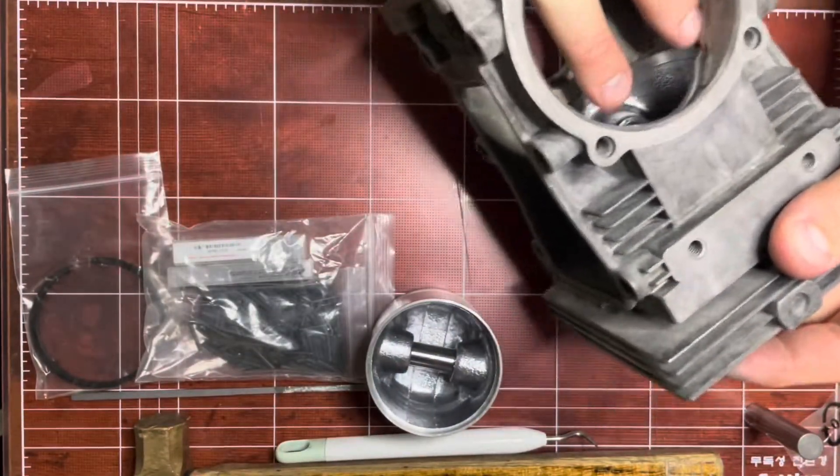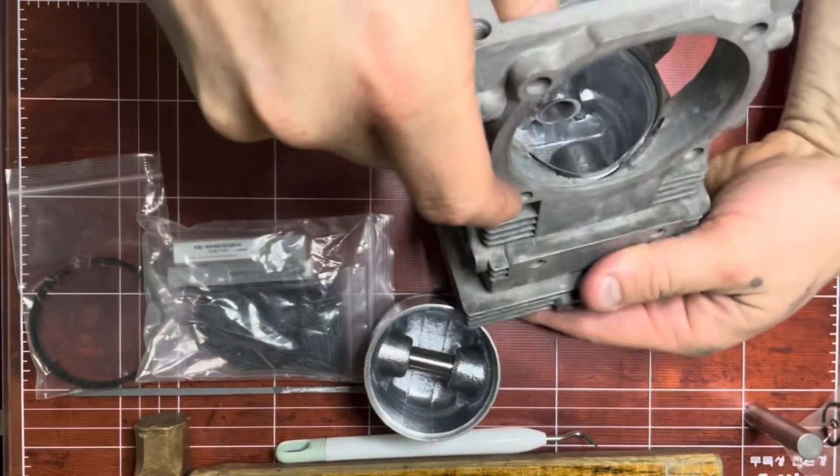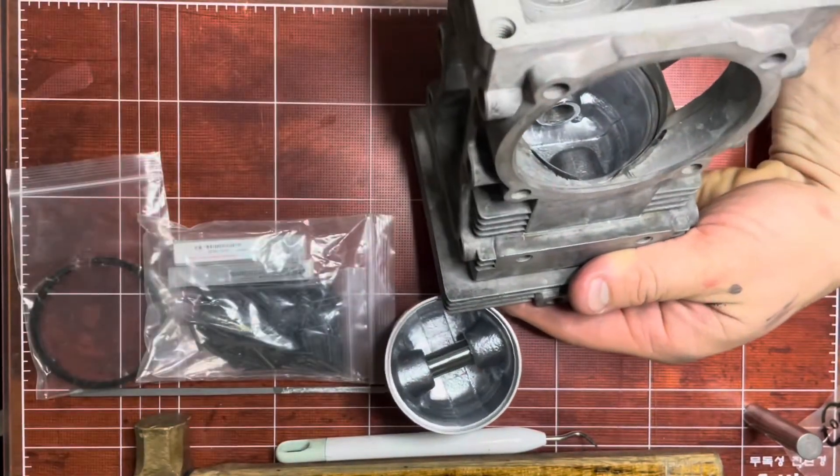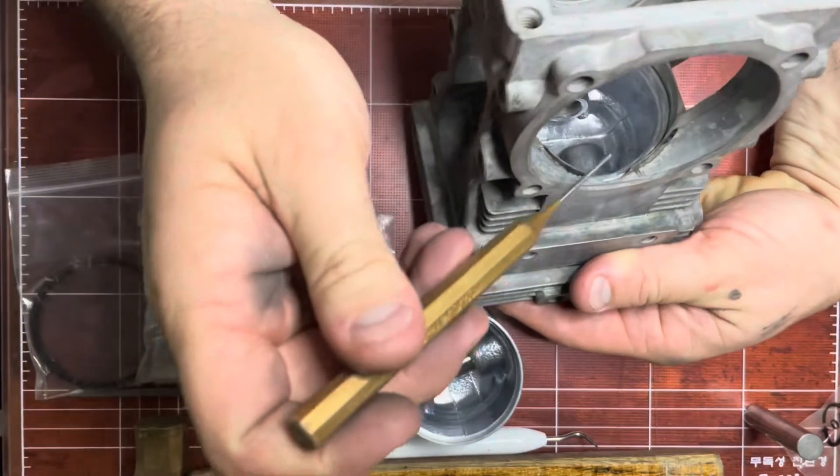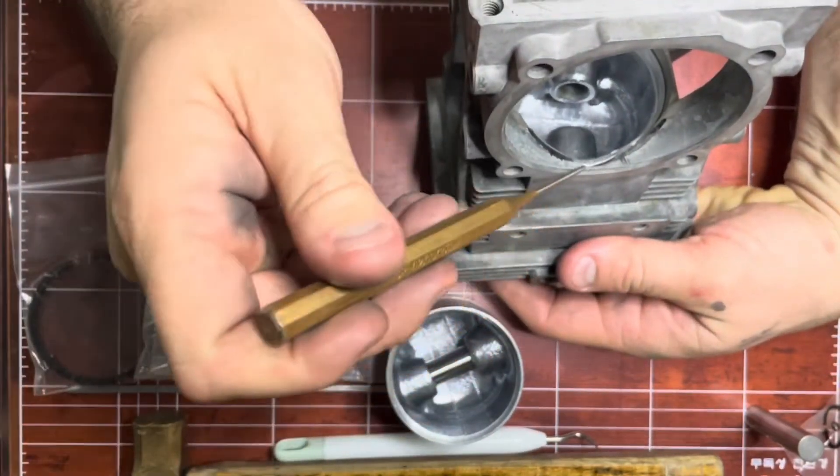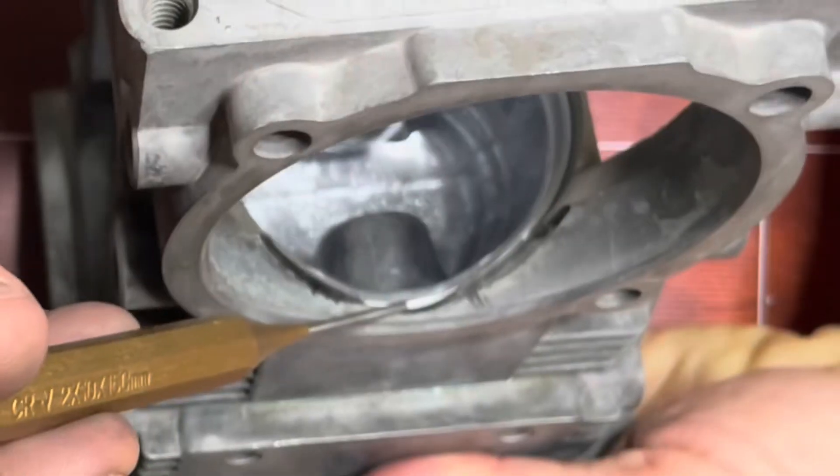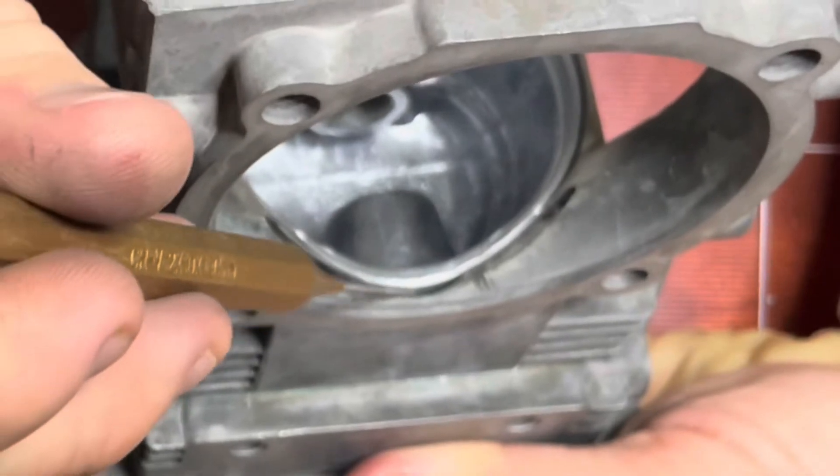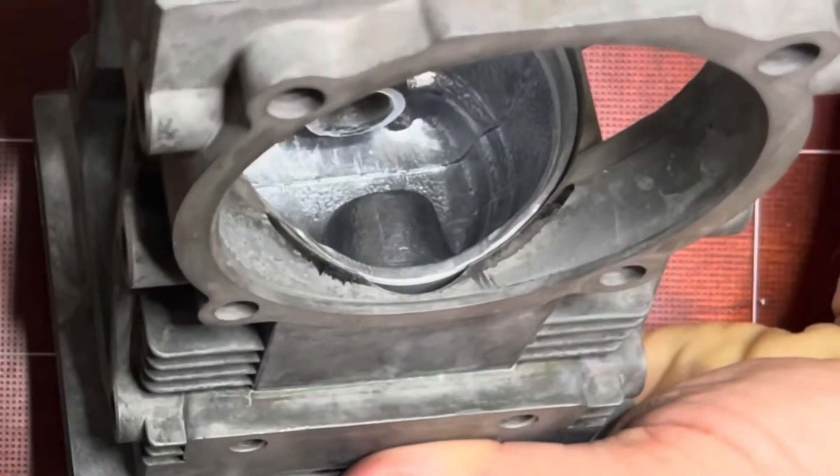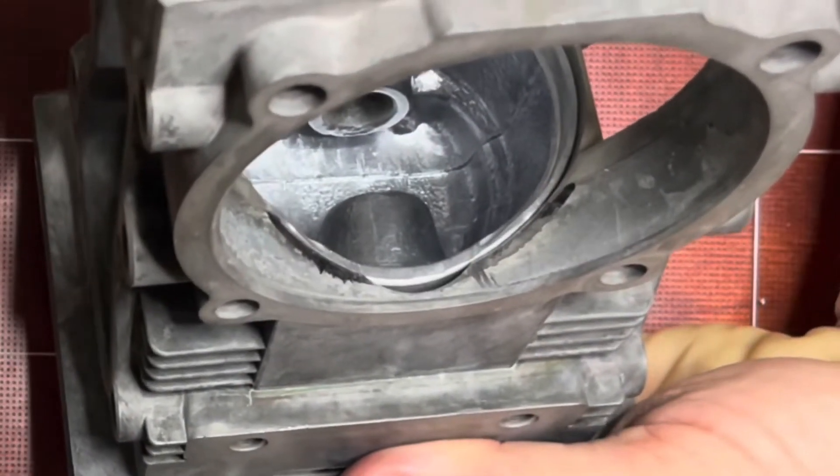...is allows fuel to flow in through this port, this extra port, even when you're at bottom dead center. So on a Westbend 700...